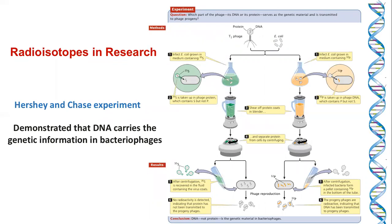Radioisotopes are not only used in medicine, but have also been a very important tool in scientific research. One of the classical examples is the Hershey and Chase experiment, which demonstrated that DNA is the carrier of genetic information and not protein, which was previously considered the genetic material. Hershey and Chase used two different radioisotopes — phosphorus-32 and sulfur-35 — as trace elements to identify the genetic material as DNA molecules in bacteriophages.